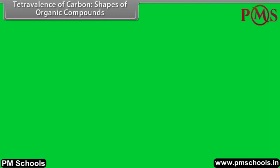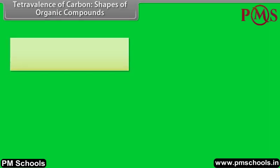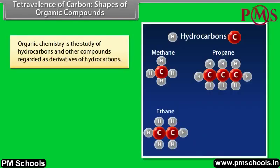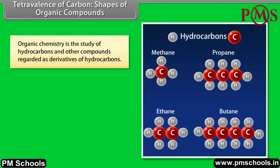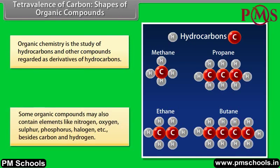Tetravalence of carbon and shapes of organic compounds. Organic chemistry is the study of hydrocarbons and other compounds regarded as derivatives of hydrocarbons. Some organic compounds may also contain elements like nitrogen, oxygen, sulfur, phosphorus, halogen, etc., besides carbon and hydrogen.